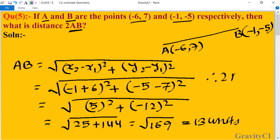Therefore, 2AB = 2 × 13 = 26 units, which is the required answer.